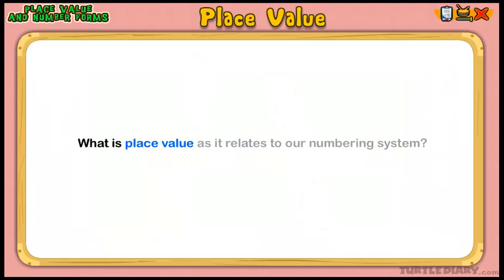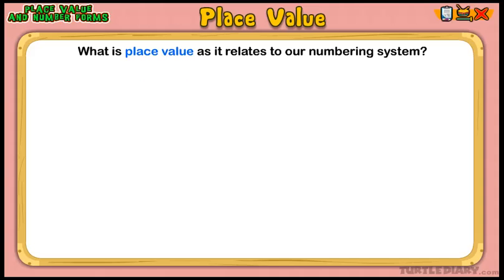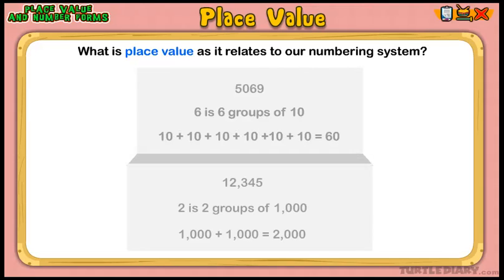What is place value as it relates to our numbering system? Very simply, place value is the position of a digit in a number. This position determines its value. In the number 5,069, the 6 refers to 6 groups of 10s because the 6 is in the 10s place.